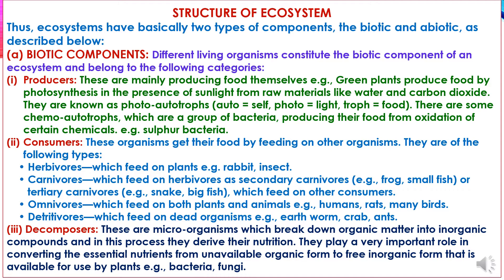The second category is consumers, which get their food by feeding on other organisms. They include: herbivores, which feed on plants like rabbits and insects; carnivores, which feed on herbivores as secondary carnivores, or tertiary carnivores which feed on other consumers; omnivores, which feed on both plants and animals like humans, rats, and many birds; and detritivores, which feed on dead organisms like earthworms, crabs, and ants. The third group is decomposers — microorganisms that break down organic matter into inorganic compounds, playing a vital role in converting essential nutrients from unavailable organic form to free inorganic form available for plants, such as bacteria and fungi.